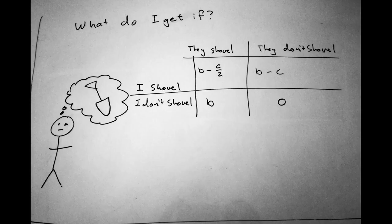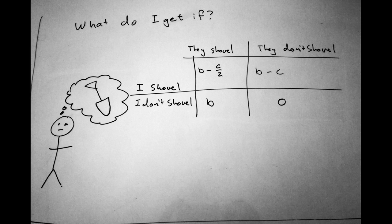Should both motorists decide to shovel snow, they each pay half of the cost C of shoveling the snow, and get reward B, going on their way home. Should only one shovel the snow, they pay the entire cost C, yet still gain reward B and get to go home, while the other motorist gets the full reward B without paying any cost.